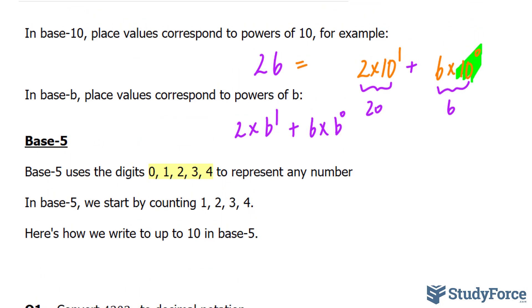In this particular video, we'll be focusing on base 5. Base 5 uses digits between 0 and 4 to represent any number. In the base 5 system, we start by counting 1, 2, 3, and 4, and of course you can start at 0.